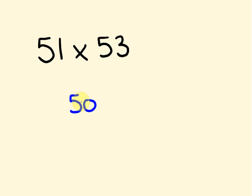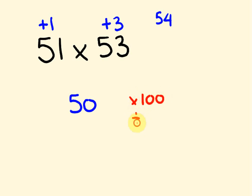We first consider our numbers compared to 50. This is one more than 50 and this is three more than 50. We cross-add: 51 plus 3 is 54. Now the key step — the easiest way to multiply by 50 is to multiply by 100 and then halve your answer. So 54 times 100 is 5,400, then we halve that to get 2,700.